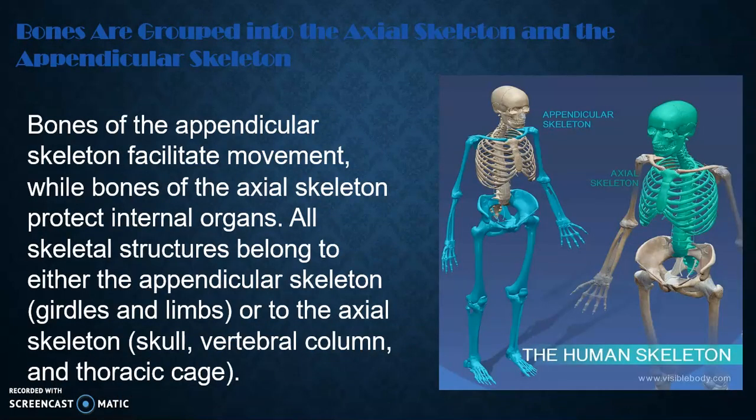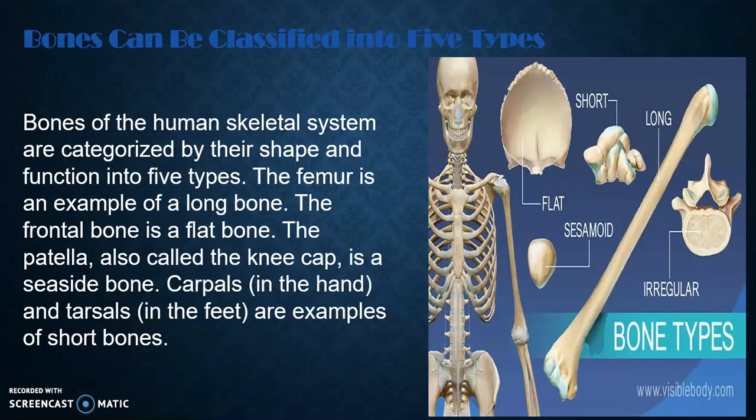Bones are grouped into the axial skeleton and the appendicular skeleton. Bones of the appendicular skeleton facilitate movement, while bones of the axial skeleton protect internal organs. All axial skeletal structures include the skull, vertebral column, and thoracic cage. Bones of the human skeletal system are categorized by their shape and function into five types. The femur is an example of a long bone.